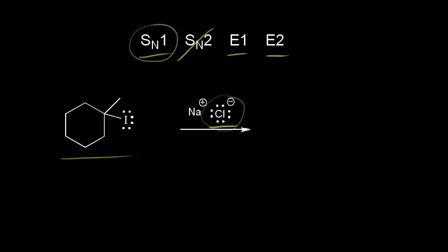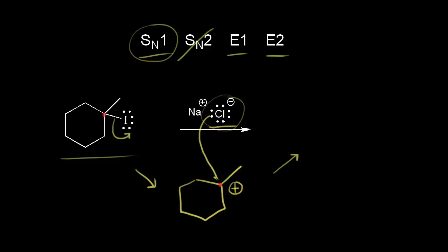In an SN1 mechanism, the first step is loss of the leaving group from the tertiary alkyl halide. We form the iodide anion and take a bond away from the carbon in red to form a tertiary carbocation with a plus one formal charge. In the next step, our nucleophile — the chloride ion — attacks: a lone pair of electrons on the chlorine forms a bond with the carbon in red, and we get our product.